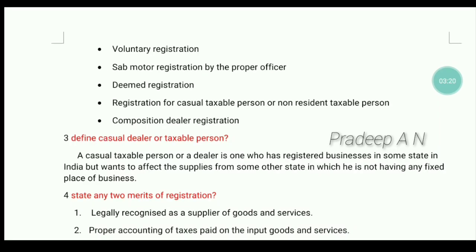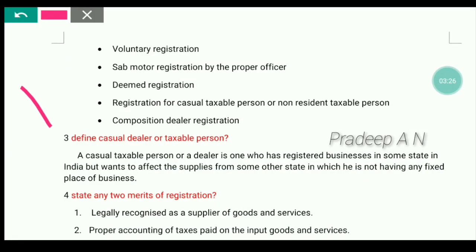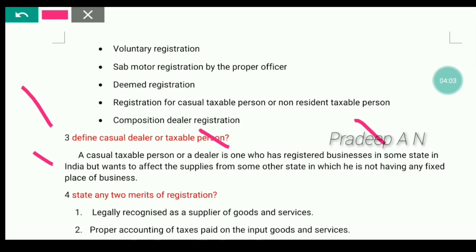Next one is: define casual taxable person. A casual taxable person or a dealer is one who has a registered business in some state in India but wants to affect supplies from some other state in which he is not having any fixed place of business.